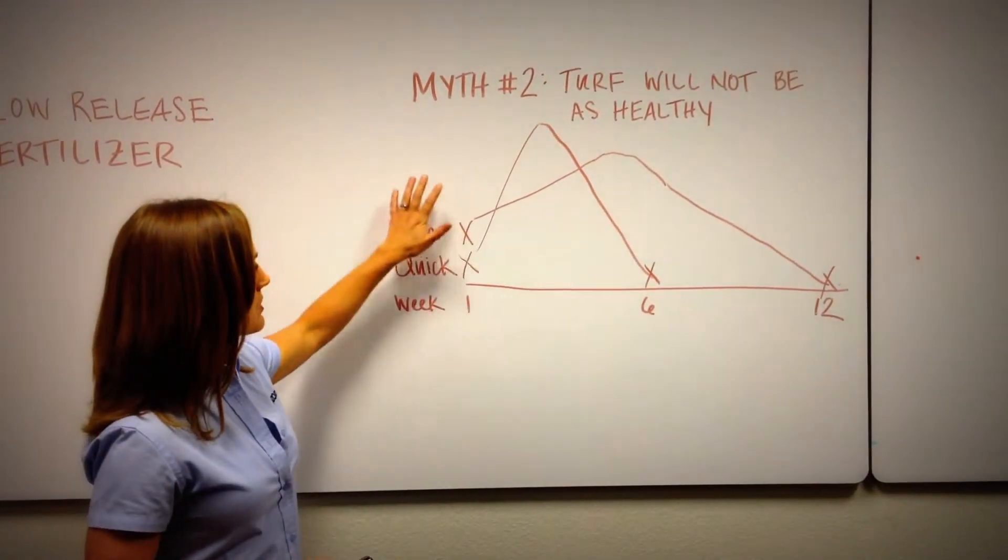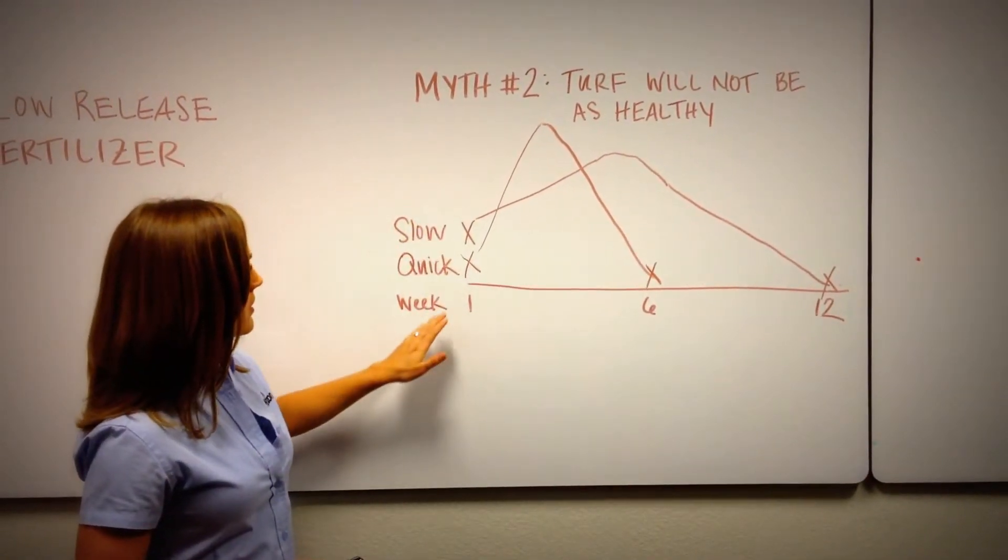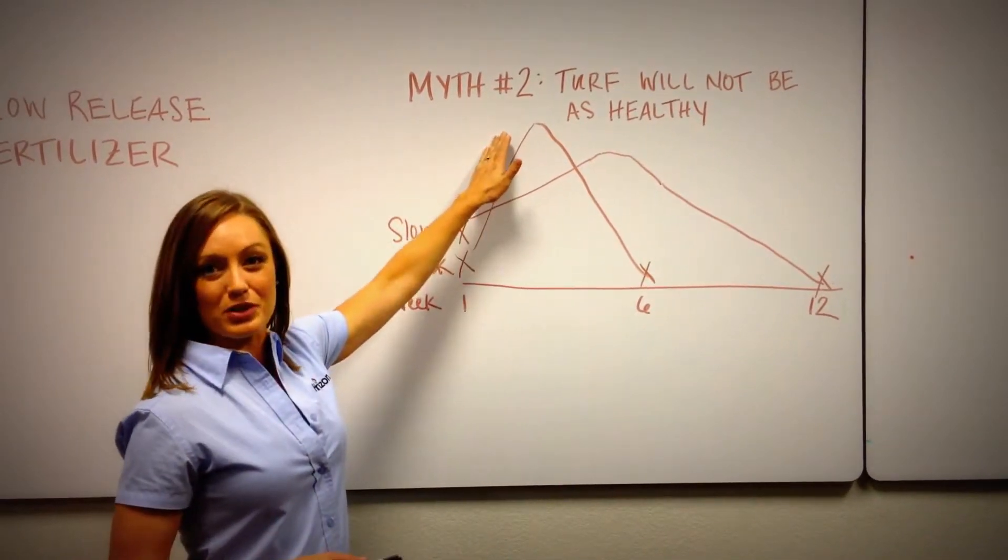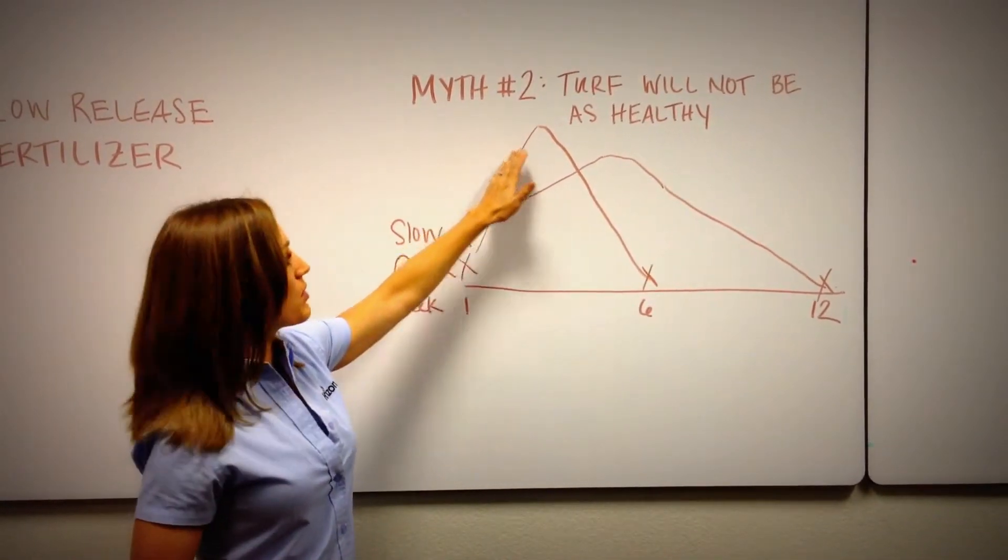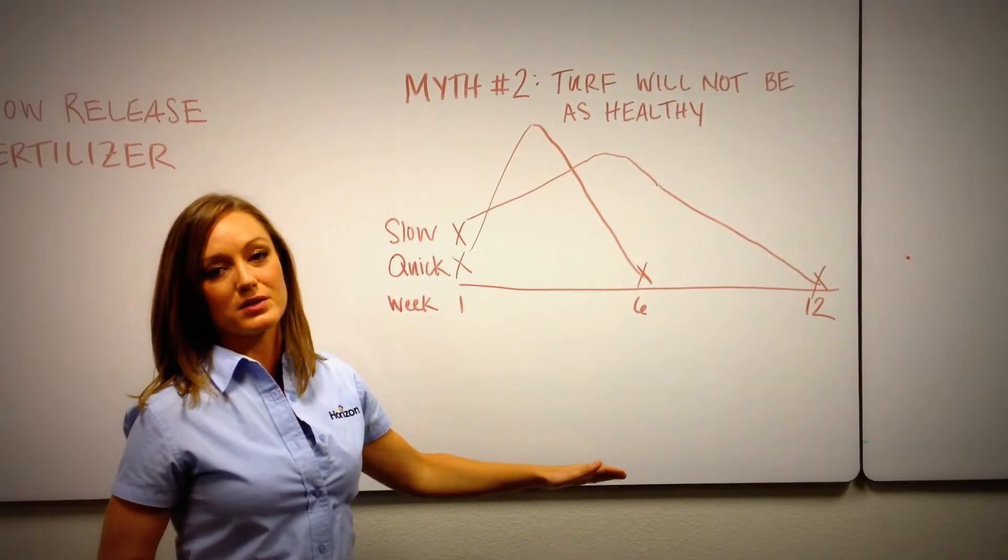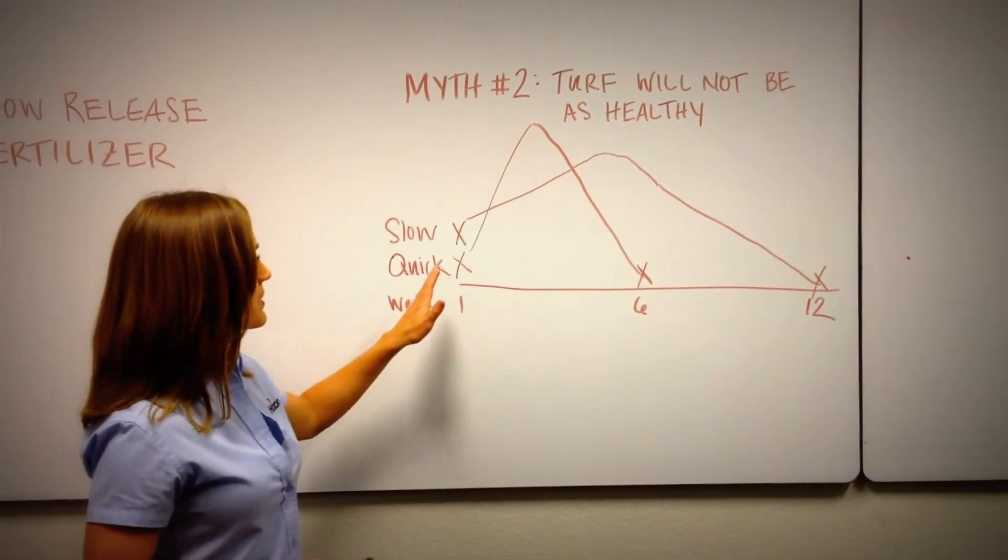And really, as we kind of looked at before, you get that flush growth at the beginning with quick release but you also get the fall really quickly. So it's peaks and valleys whereas the slow release...